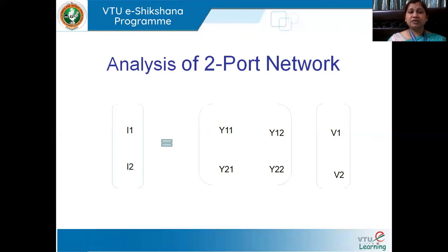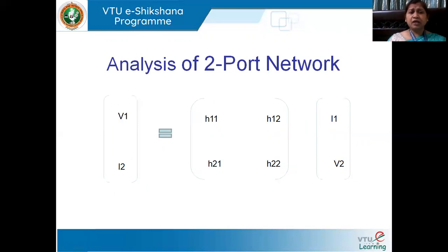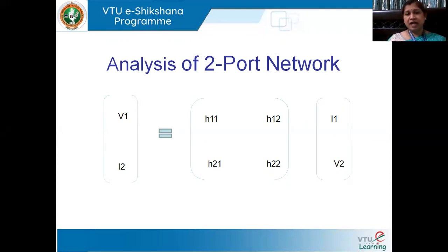The Y parameter is also known as the admittance parameter. Using the Y parameter, we can similarly get a relationship between current and voltage at both the input and output ports. We also have H parameters, called hybrid parameters — we call them hybrid because sometimes the parameter is in terms of impedance, sometimes admittance, sometimes voltage gain, and sometimes current gain. Because of this mixture, it is known as hybrid parameters.